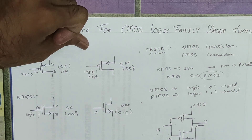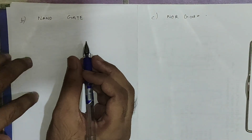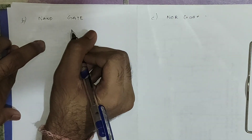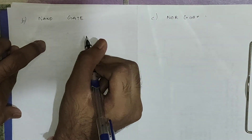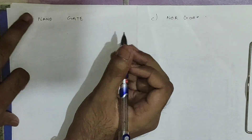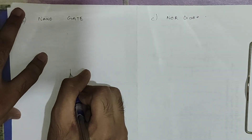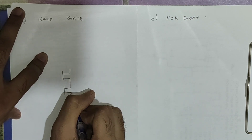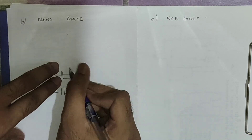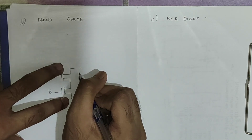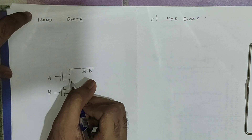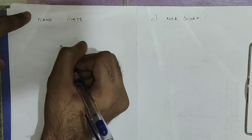Now to build a NAND gate, we first make an AND gate and then take the output from the drain to get the complement. For the AND gate we place two NMOS in series — this creates the AND function. Taking output from one of the drains gives us the complement, basically A·B bar. The PMOS will be the complement of NMOS, so PMOS will be in parallel.